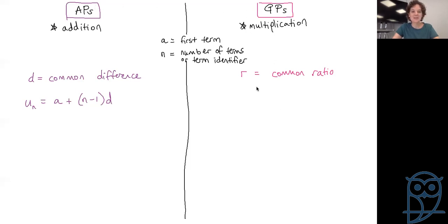How do we calculate a single term for an AP? We can use the fact that uN, our unknown term, equals a plus (n minus 1) times d. If I told you to calculate the fifth term and told you what the first term was and the common difference was, you're sorted. You can plug in the numbers and calculate your fifth term or your tenth term.